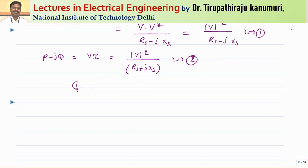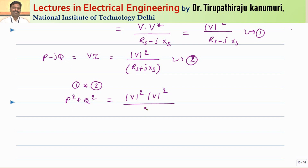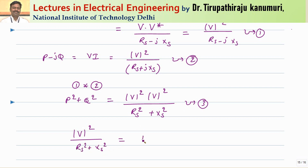Now I multiply Equation 1 and Equation 2. The left side gives (P + jQ)(P − jQ) = P² + Q². The right side gives V⁴ divided by (rs + j·xs)(rs − j·xs) = rs² + xs² (since j² = −1). Call this Equation 3. Rearranging: V² divided by (rs² + xs²) equals (P² + Q²) divided by V² — call this Equation 4.